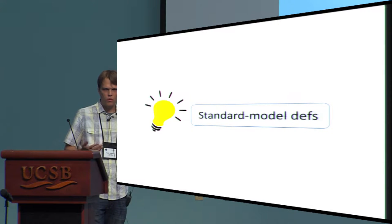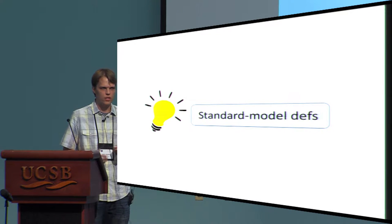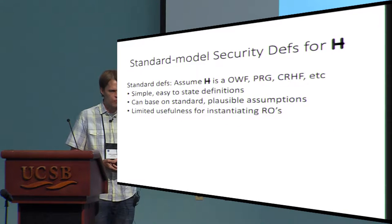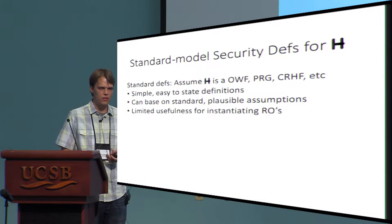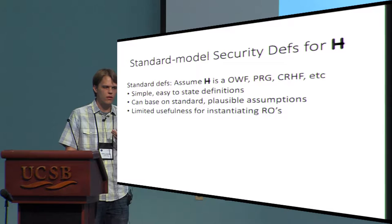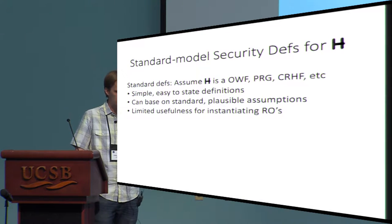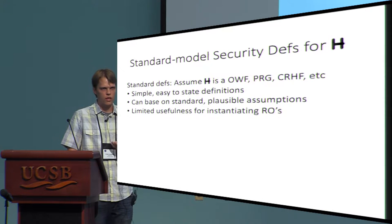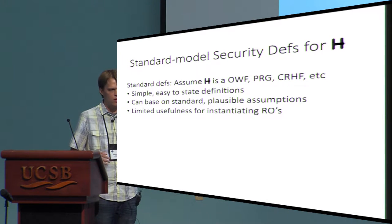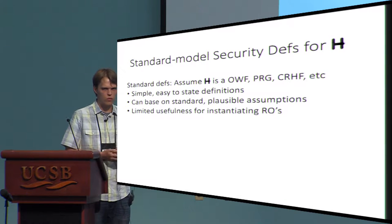The next approach, if we don't want a heuristic and actually want a security proof, is to look at standard model definitions for the hash function H. We could start with the standard definitions: things like one-wayness, pseudorandom generators, collision-resistant hash functions, and so forth. These definitions have the advantage of being very simple and easy to state — they're some of the weakest assumptions used in cryptography, and we can base them on a variety of number-theoretic assumptions. Unfortunately, they have limited usefulness for instantiating random oracles, and for the scheme I described, even assuming H satisfies one of these standard definitions, we don't know how to prove security.